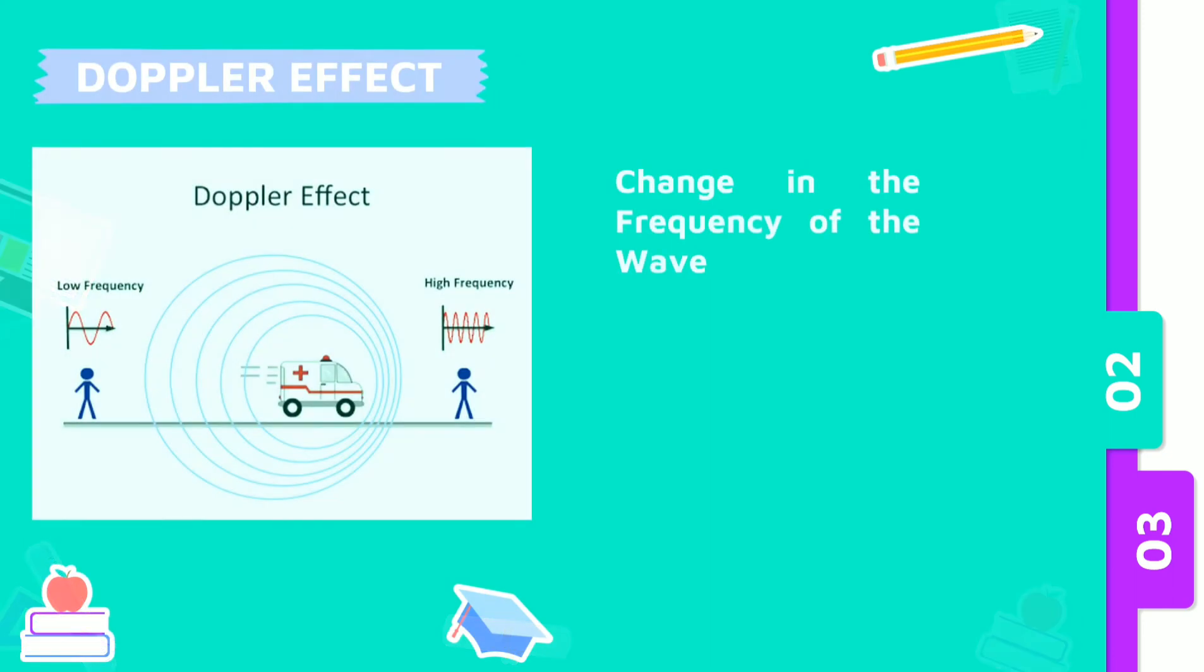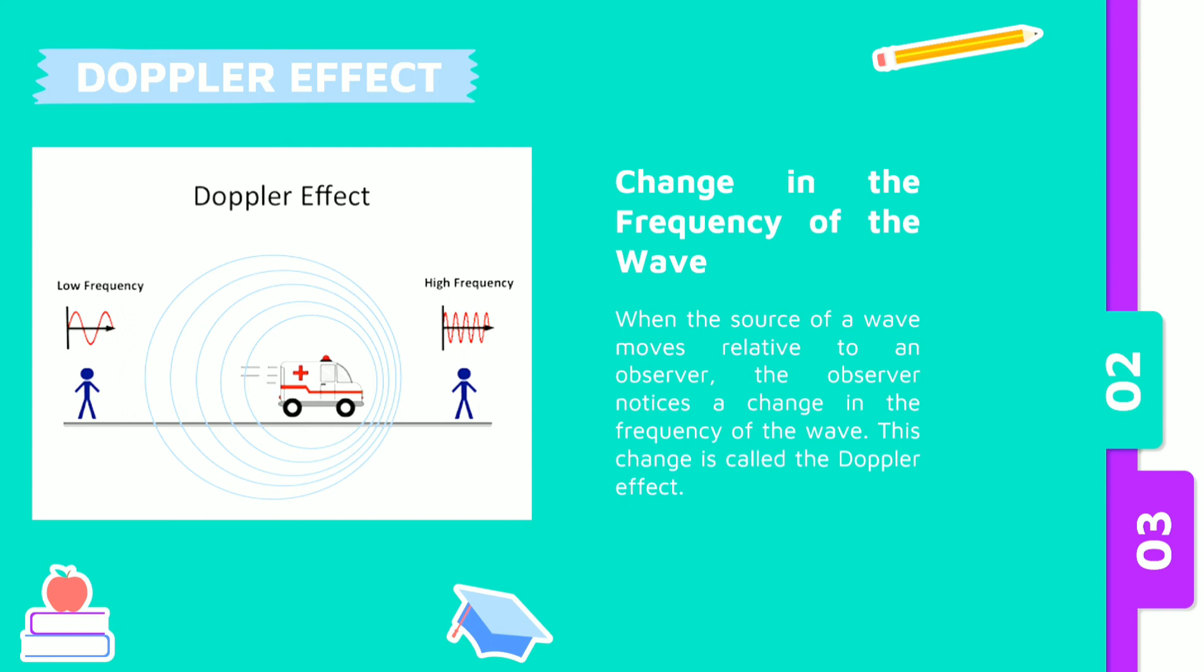The last one is Doppler effect. When the source of a wave moves relative to an observer, the observer notices a change in the frequency of the wave. This change is called the Doppler effect. Consider a source emitting a wave, such as light or sound of frequency V, moving away from an observer at velocity V.